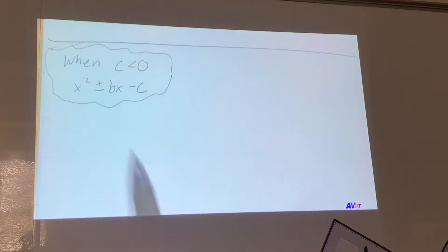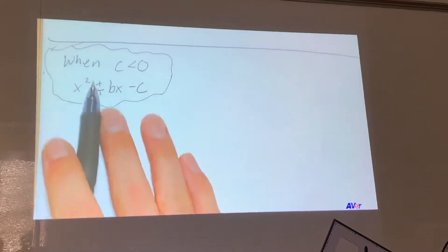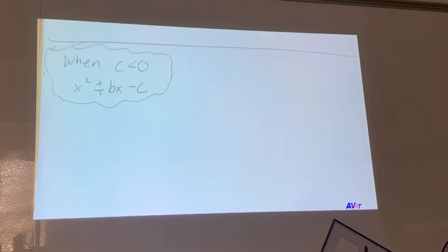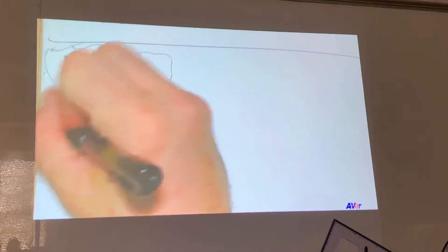When c is less than zero, we're going to be looking at polynomials in the form of x squared. This would be a positive or negative bx, and then this would be a minus c for today. And yesterday, this was a positive or negative, but c was positive. Alright, so let's look at an example.